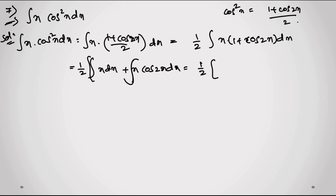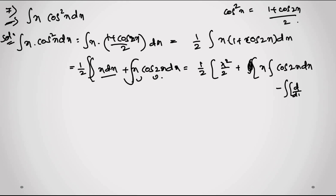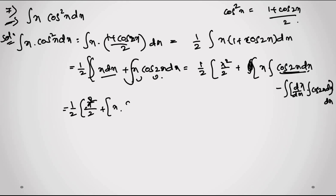I separate this as: (1/2)·[integral of x dx + integral of x·cos(2x) dx]. The first part gives x²/2. For the second part, applying IBP: x·sin(2x)/2 minus integral of 1·sin(2x)/2 dx, which gives x·sin(2x)/2 − (−cos(2x)/4).